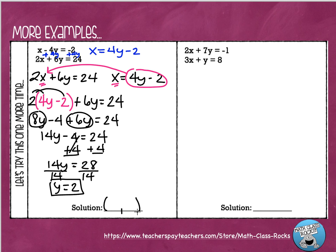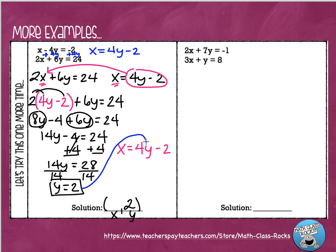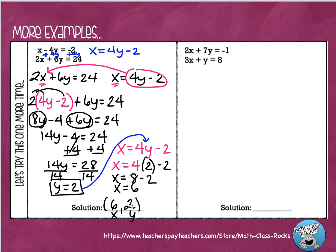So in my ordered pair, this is the y value — that's the second number in our solution, because x comes first and then y. Now that I know y equals 2, I'm going to take the nice easy equation: x equals 4y minus 2. I'm going to take this value of 2 and put it where my y goes. So x equals 4 times 2 minus 2 — that's 8 minus 2 — giving me x equals 6. So the first number in my ordered pair will be 6, making my solution positive 6, positive 2.